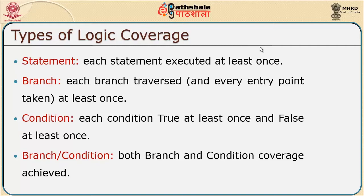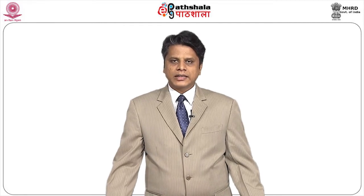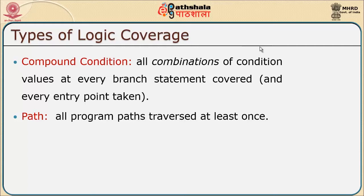I will also check that each condition needs to be true at least once — meaning if I have a condition, I should have checked for its true clause and also for its false clause. I will also check for both the condition and the branch. At certain times I may have a combination or a compound condition, where all possible combination values at every branch, whether covered or not, will be checked. Finally, I will verify that all program paths have been traversed at least once — that is the path identification.